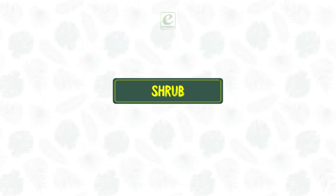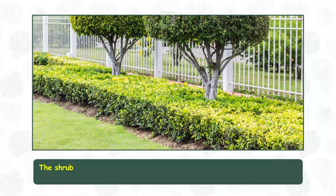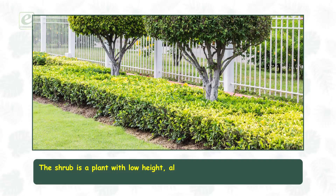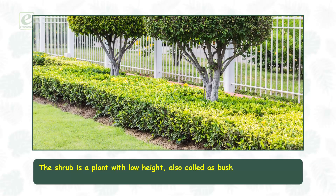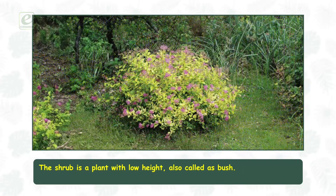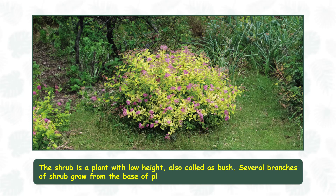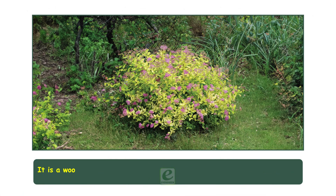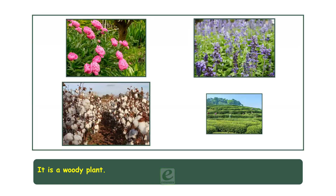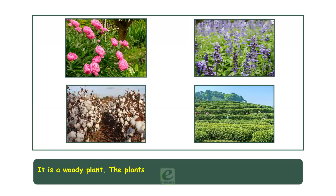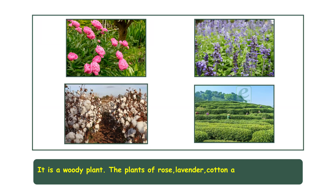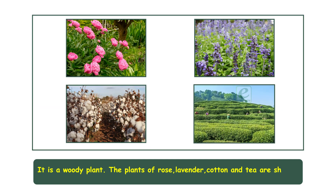Shrub. The shrub is a plant with low height, also called a bush. Several branches of the shrub grow from the base of the plant and the stem is almost absent. It is a woody plant. The plants of rose, lavender, cotton, and tea are shrubs.